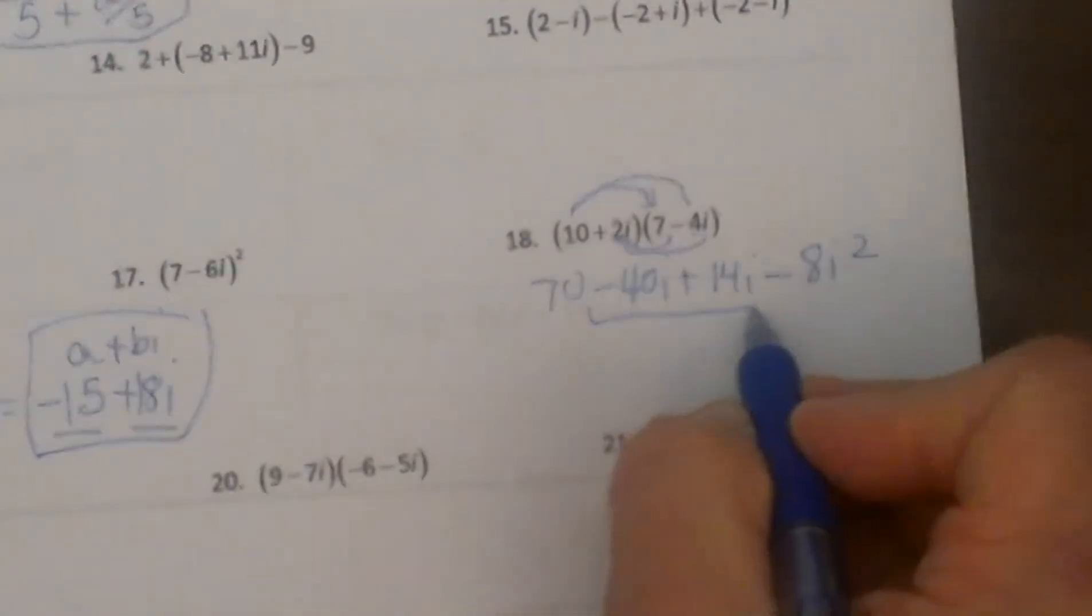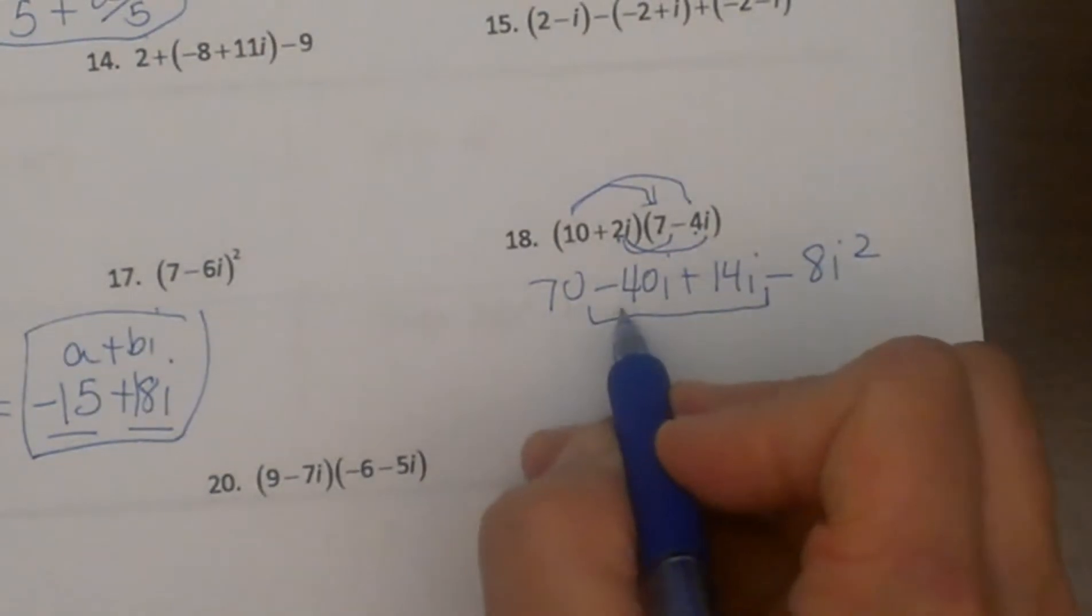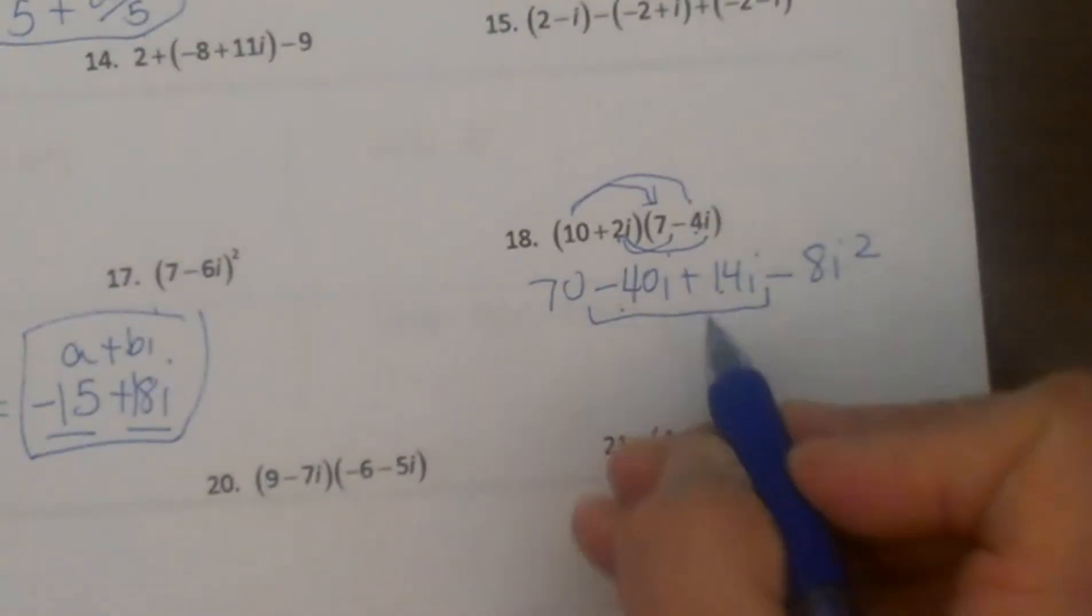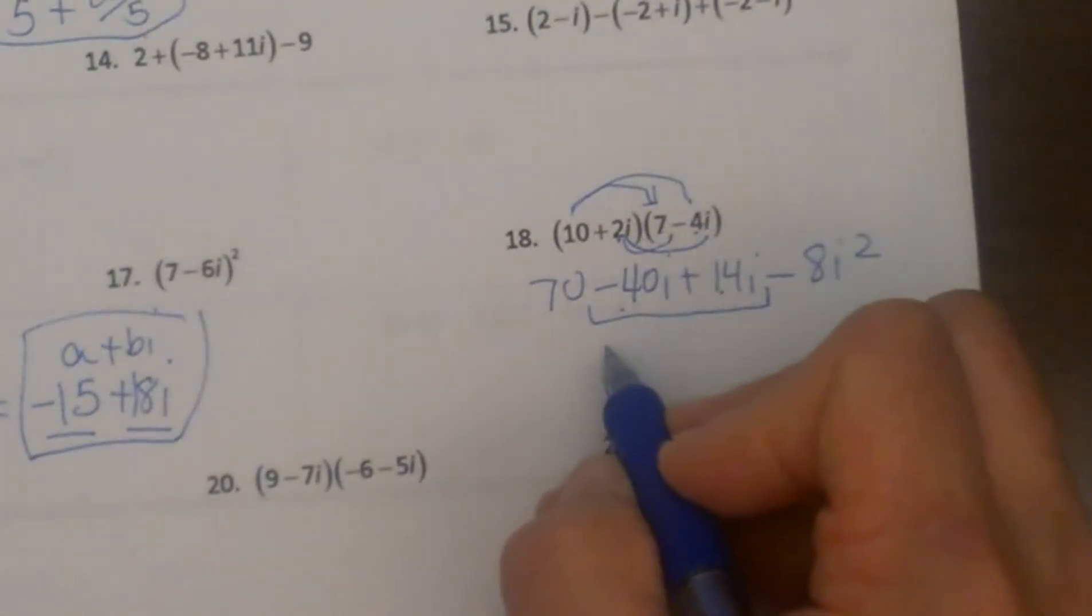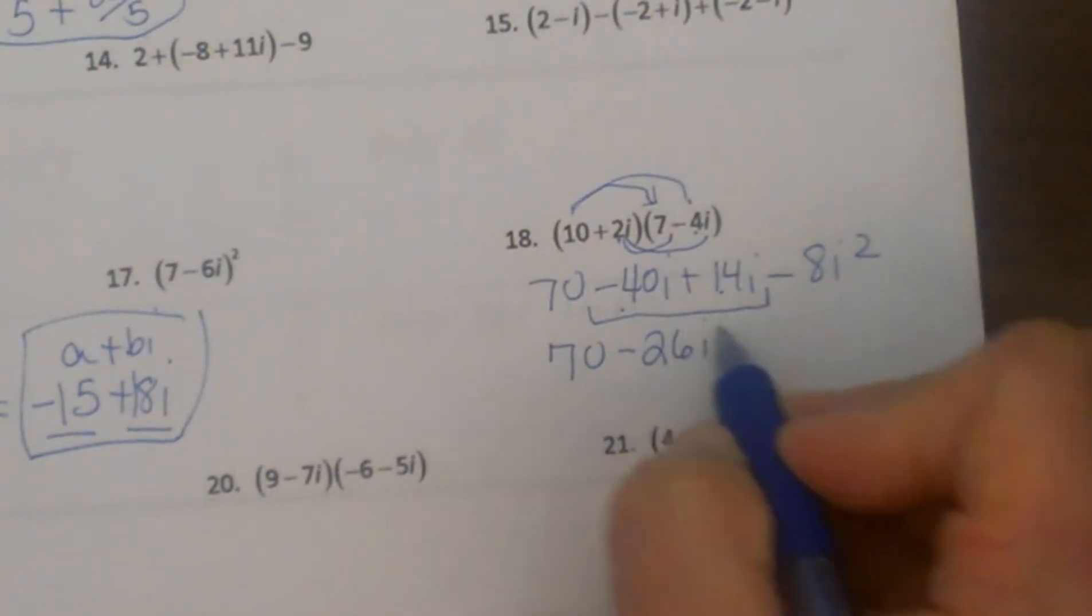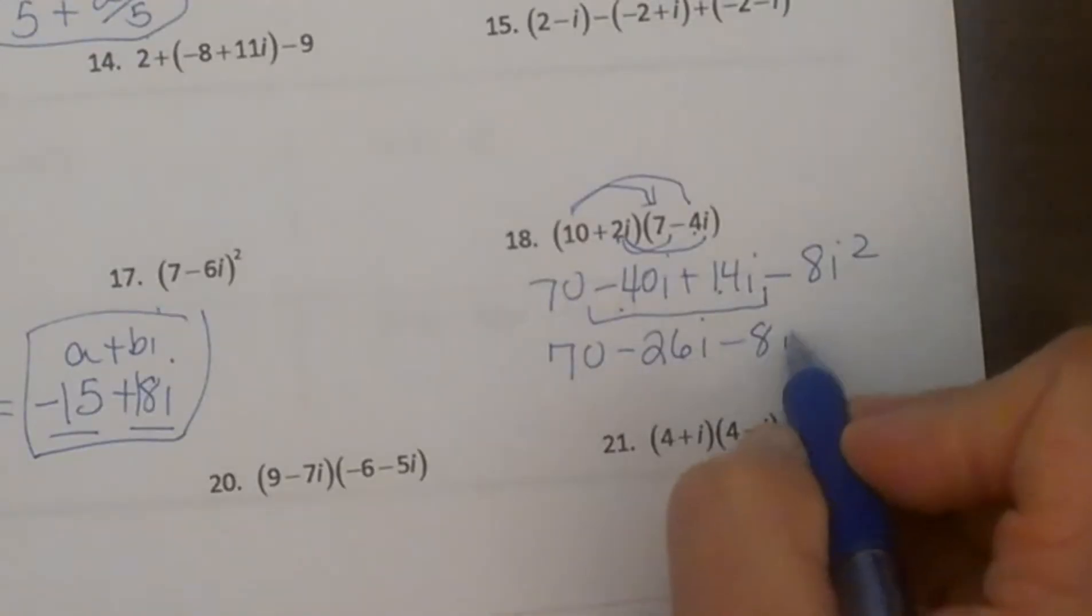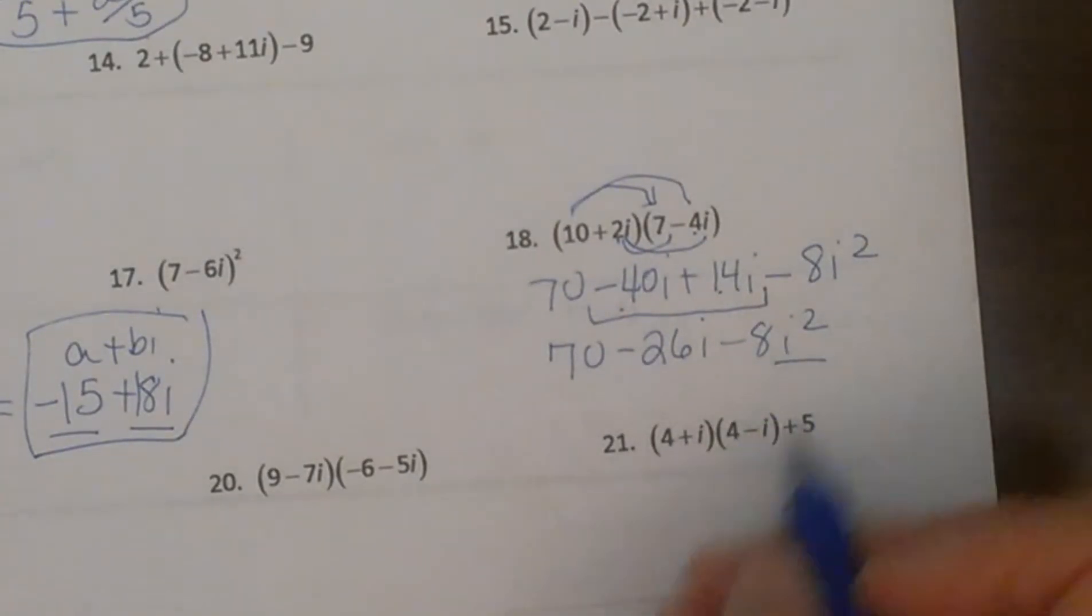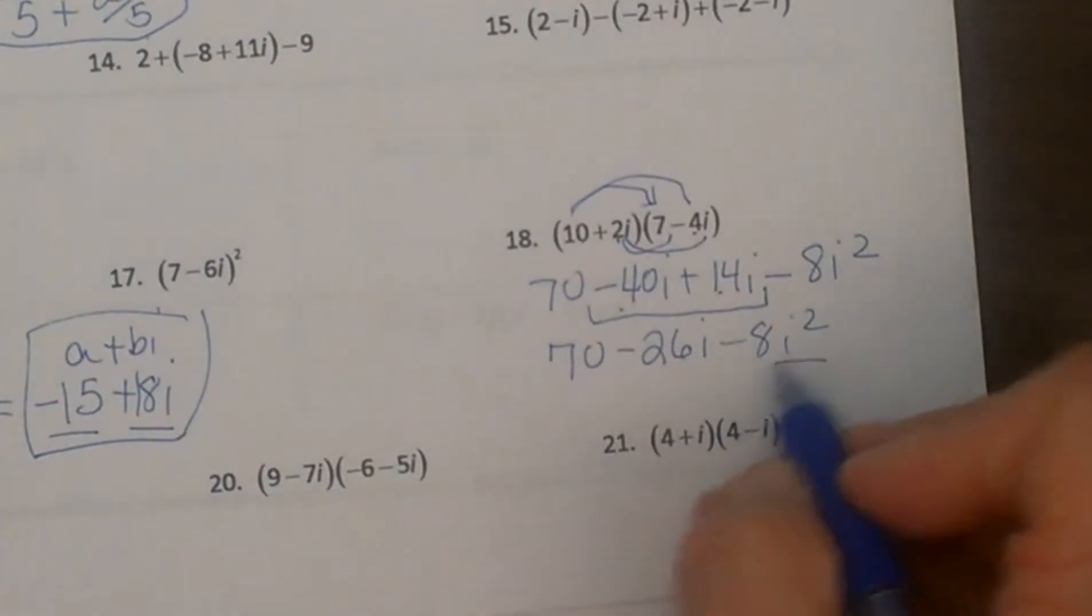Well, we can combine the two imaginary parts, so negative 40 plus 14, that is going to give us negative 26. So that is going to be 70 minus 26i and then minus 8i squared. Well, we know i squared is equal to negative 1, so I am now going to replace i squared with a negative 1.